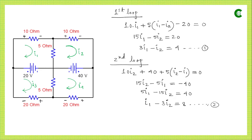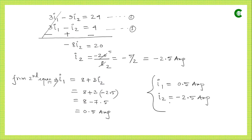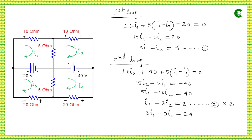Simplifying Equations 1 and 2 for the two unknowns i1 and i2 — multiplying one equation by 3 gives 3·i1 − 9·i2 = 24. Solving both equations, we get i1 = 0.5 A and i2 = −2.5 A. The negative sign for i2 means the actual direction of current in the second loop is anti-clockwise, opposite to our assumed clockwise direction.